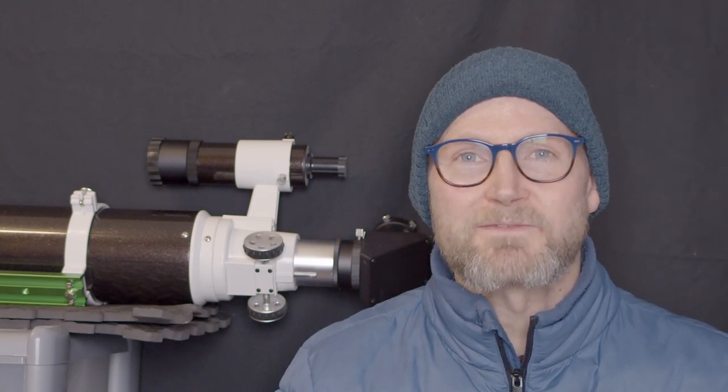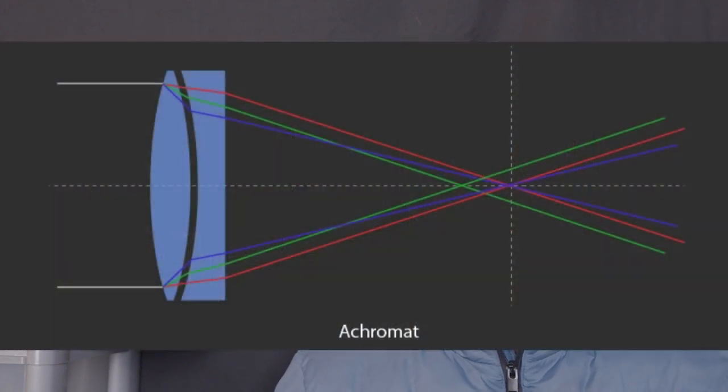Now when the light gets refracted by these two elements at the front of an achromatic refractor, the crown and the flint elements usually, they focus at different points depending on the wavelength. And generally a simple way of putting it is that the red and the blue wavelengths focus at a different point to the green wavelengths.